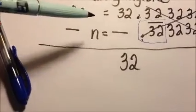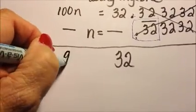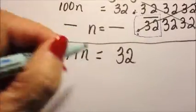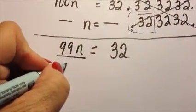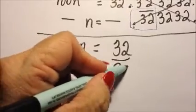Then 100n minus n would be 99n. And then I just solve for n by dividing both sides by 99.